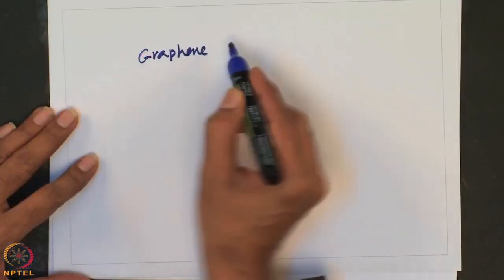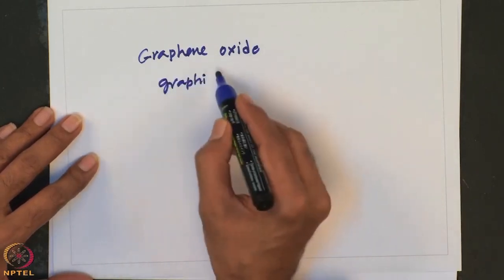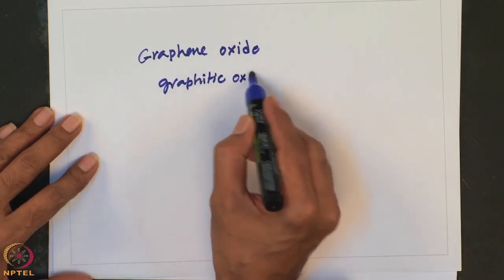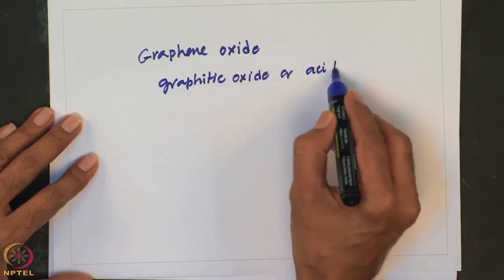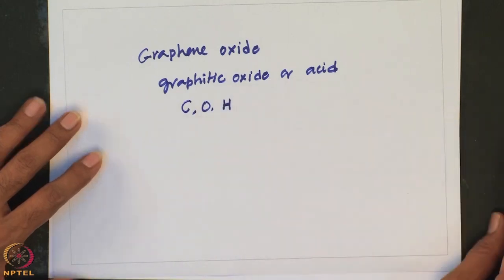Let us look into another important compound of graphene — graphene oxide. Graphene oxide, formerly called graphitic oxide, is also called graphitic acid. It is a compound of carbon, oxygen and hydrogen in variable ratios. By the oxidation of graphite or graphene using strong oxidizing agents, oxygenated functionalities are introduced in the graphite structure, which not only expand the layer separation but also make the material hydrophilic. You should remember graphene or graphite is hydrophobic, but adding these oxygenated functionalities makes the material hydrophilic.